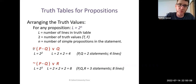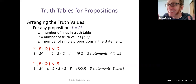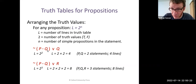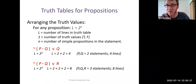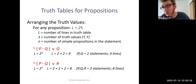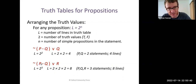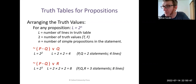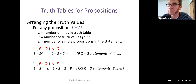For example, consider: it's not the case that P and Q, or Q. How many simple statements are there? Count the different capital letters. You've got P and Q — two simple statements. So how many lines will you need? 2 raised to the power of 2, which is 2 times 2, equals 4. What about: it's not the case that P and Q, or R? Now you've got three capital letters, three simple statements. So you need 2 to the third power — 2 times 2 times 2 — equals 8.